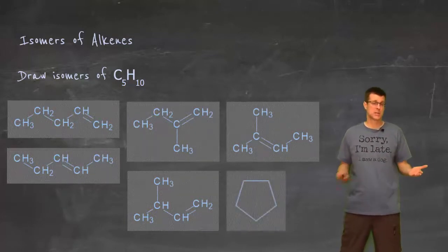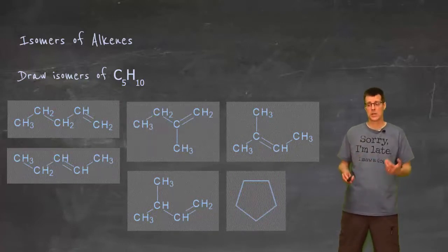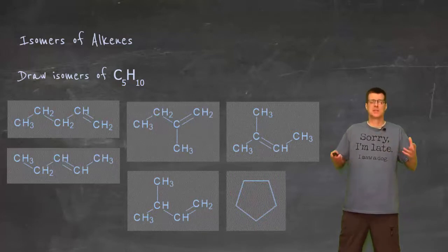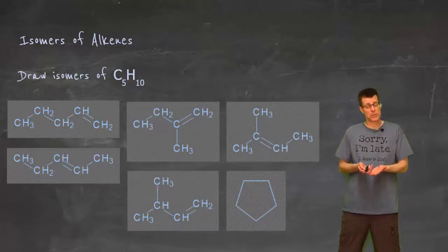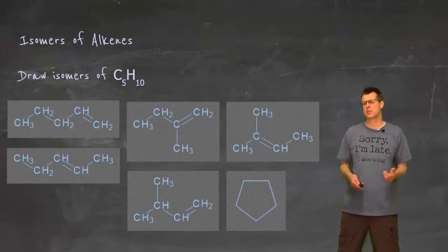And then, of course, because alkenes and cycloalkanes are isomers, I could start it over with a cycloalkane. And then I could make the cycloalkane, the ring a little bit shorter, and put a branch on it. So I've got lots more possibilities.